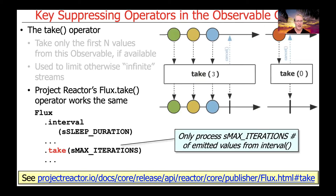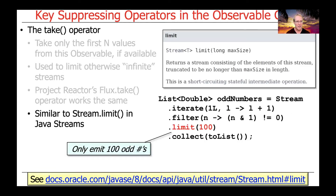Project Reactor also has a take operator defined in its flux class that works the same way. Both of these methods are very similar to the limit method defined in Java streams' stream interface. Here's an example where we're collecting items that are odd numbers and storing them after limiting the number to the first 100.